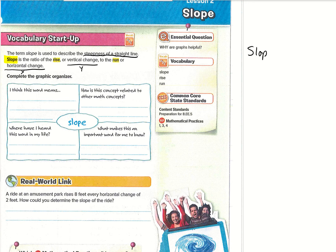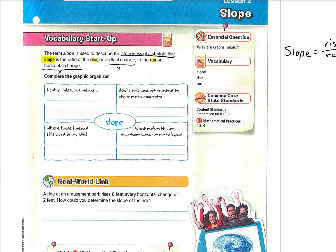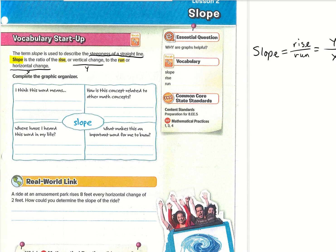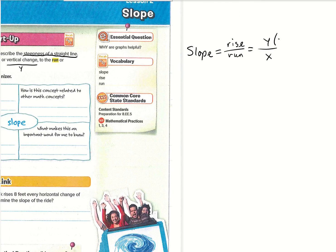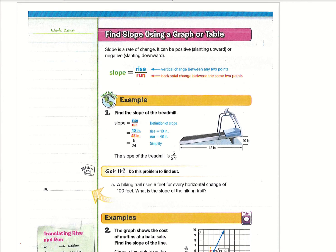So slope is going to equal rise over run, which is the vertical change — y — over the horizontal change — x. Just remember that's not just y and x, that's the change in y and the change in x. So this is on page 182: find slope using a graph or a table. The rise is your vertical change and the run is your horizontal change.